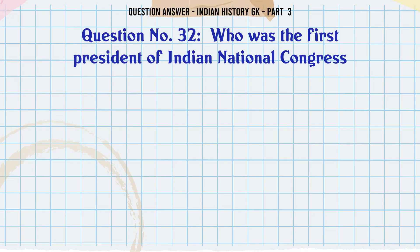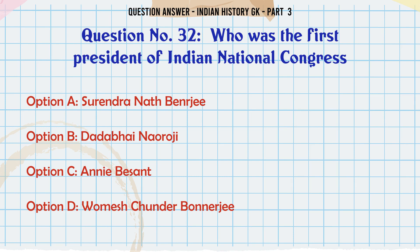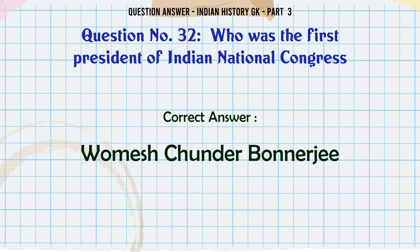Who was the first president of Indian National Congress? A. Surendranath Banerjee, B. Dadabhai Naoroji, C. Annie Besant, D. Womesh Chunder Bonnerjee. The correct answer is Womesh Chunder Bonnerjee.